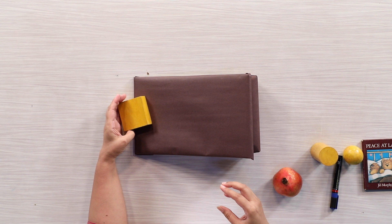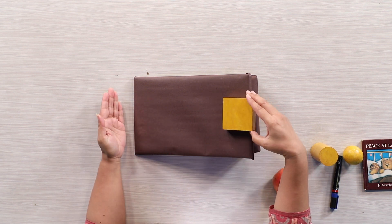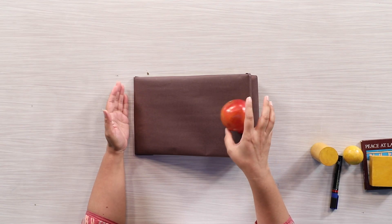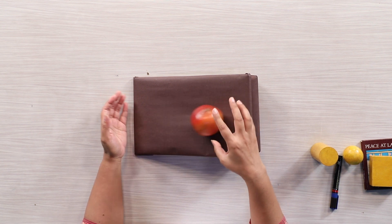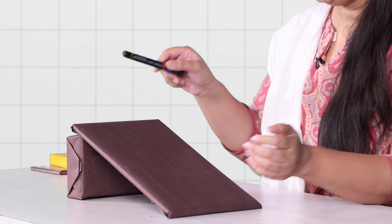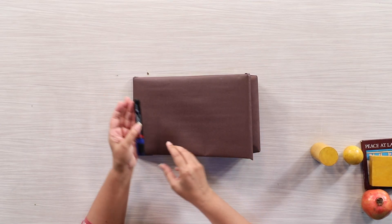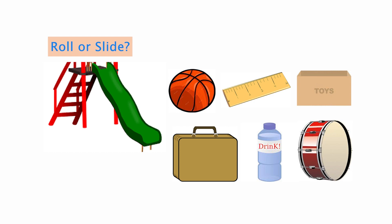Next, we have a small box-shaped object — it is sliding, isn't it? Then we have a pomegranate — it is rolling! So the pomegranate rolls. Next, we have a marker. Let us see what it does... it is rolling — oh wait, just now it slid! Can you identify which of the objects in the shown image will roll or slide?